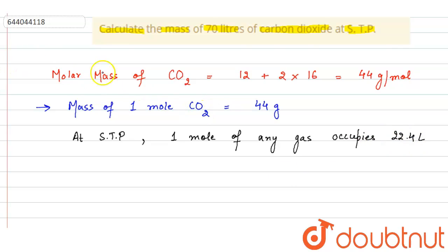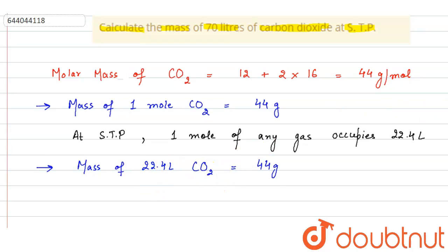So 1 mole of carbon dioxide gas means it has 22.4 liters. Mass of 1 mole carbon dioxide is 44 grams. It means at STP, mass of 22.4 liter carbon dioxide will also be equal to 44 grams, as 1 mole carbon dioxide equals 22.4 liter carbon dioxide.